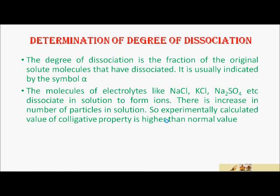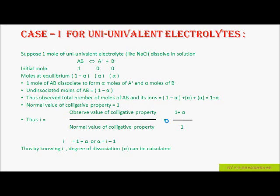Determination of degree of dissociation using the Van't Hoff factor. The degree of dissociation is the fraction of the original solute molecules that have dissociated, indicated by the symbol alpha (α). Molecules of electrolytes like NaCl, KCl, Na₂SO₄, etc. dissociate in solution to form ions, increasing the number of particles. Thus the experimentally calculated value of colligative property is higher than the normal value. NaCl and KCl are known as uni-univalent electrolytes. Na₂SO₄ is different because it dissociates into two Na⁺ ions and one SO₄²⁻ ion.